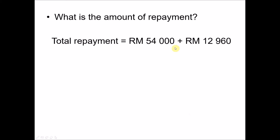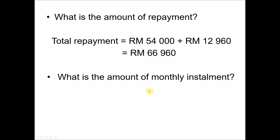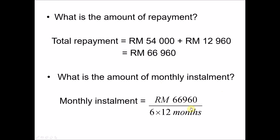The total repayment is fifty-four thousand plus the interest of twelve thousand nine hundred and sixty, giving sixty-six thousand nine hundred and sixty ringgit. Since he pays back over six years — that is seventy-two months — the monthly installment is sixty-six thousand nine hundred and sixty divided by seventy-two, which equals nine hundred and thirty ringgit per month. These two values — total repayment and monthly installment — are the key things to calculate.